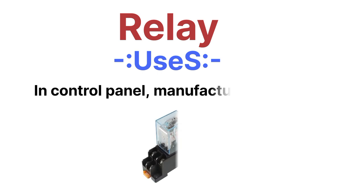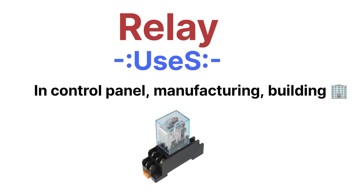Relays are normally used in control panels, manufacturing, and building automation systems to control power along with sensing smaller current values in the control circuit. They sense smaller current values or faults in the system, which is why relays are used in control panels, automation systems, and manufacturing and building applications.